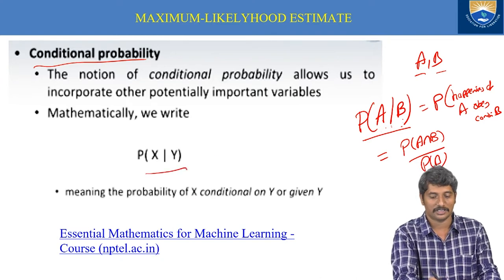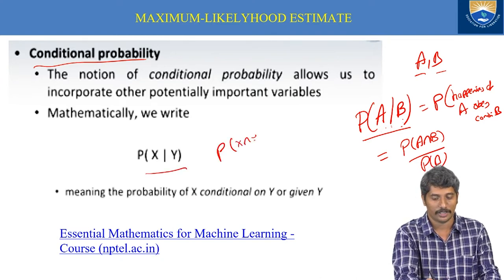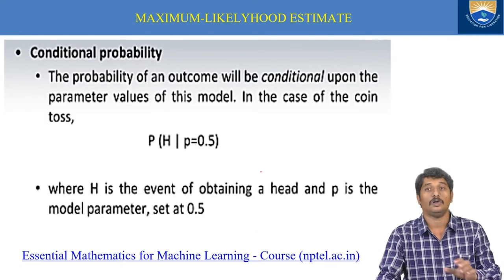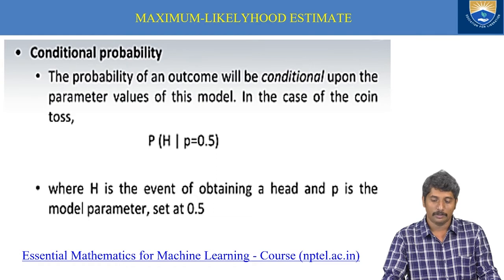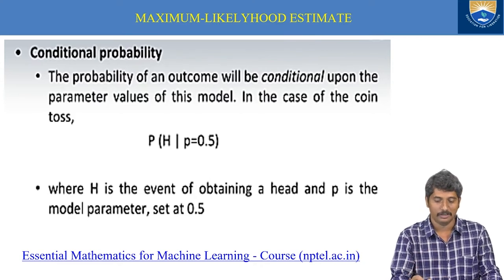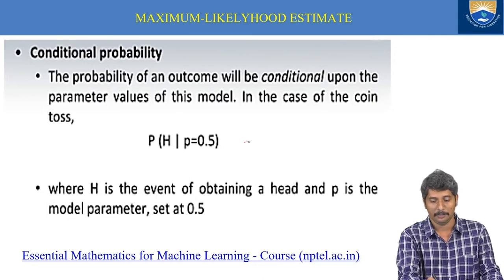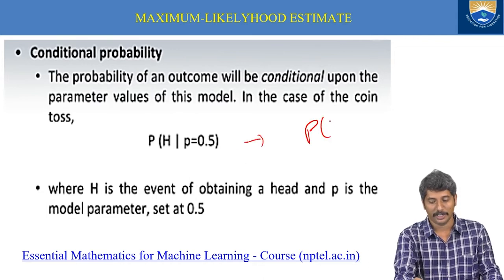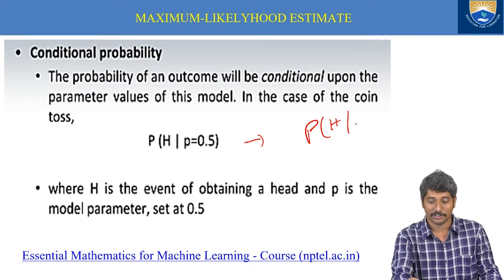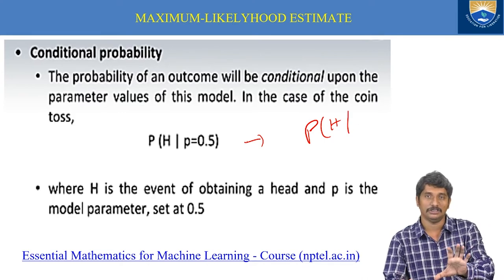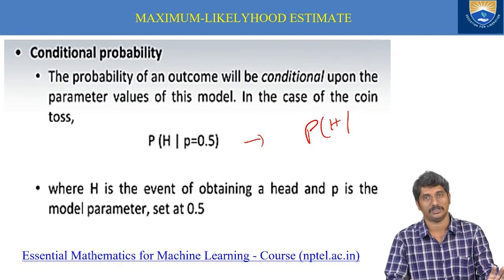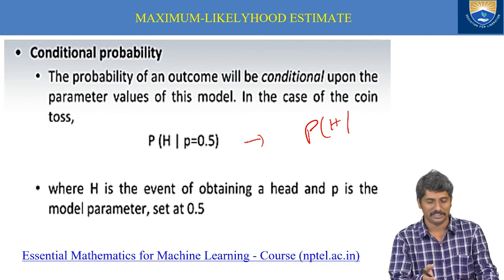For example, P(X|Y) = P(X∩Y) / P(Y). The probability of an outcome will be conditional upon the parameter values of the model. In the case of a coin toss, P(H | p=0.5) means the probability of getting a head given that there is an equal chance of getting a head — i.e., the coin is unbiased.